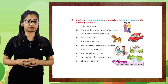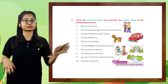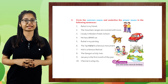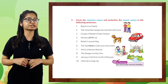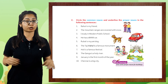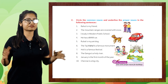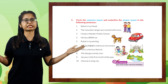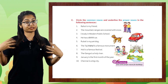'Ruble is my pet dog.' There can be any pet dog, so 'dog' is a common noun and 'Ruble' is a proper noun. Next: 'The Taj Mahal is a famous monument.' A monument can be so many things, so 'monument' is a common noun and 'Taj Mahal' is a proper noun. 'Holi is a famous festival.' A festival could be any one, so 'festival' is a common noun and 'Holi' is a proper noun.